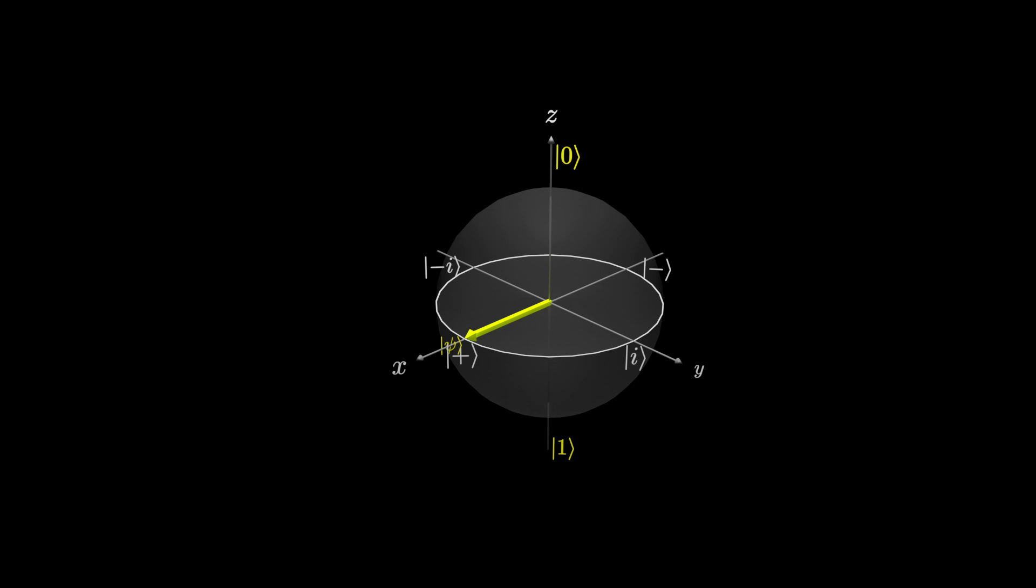On the Bloch sphere, we saw in the previous lessons that we could also rotate around the z-axis. This is called phase. It may not seem very useful, as the probability of measuring a 0 or a 1 is still the same, no matter how much we rotate around. But phase is what makes quantum computers as powerful as they are. We will get into the uses of phase in the next lesson. In this lesson, we will see how we can represent phase mathematically.